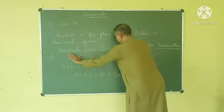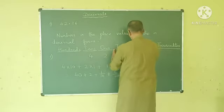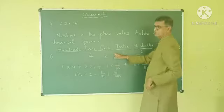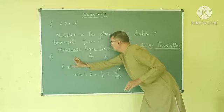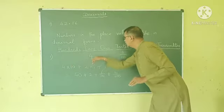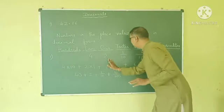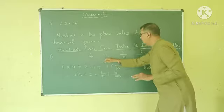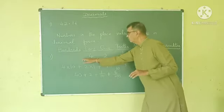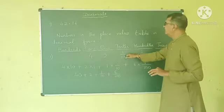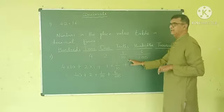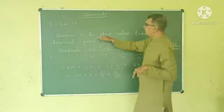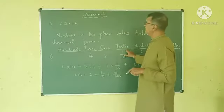Whereas when I come on to the right side of the decimal, as you go on to the right hand side, you go on dividing. So here, 1 is there after the decimal, I divide it by 10, because here it comes tenths.